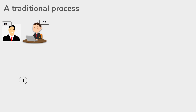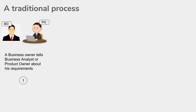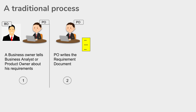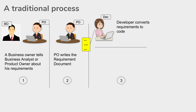Let us first understand a traditional process of development. It starts when a product owner or a business analyst meets the business owner or the stakeholders of the application. The stakeholders tell the business analyst or the product owner about their needs, the features they need in the application or the changes they need. Then the product owner writes these requirements in a requirement document, which is shared with the dev team who starts with their coding.